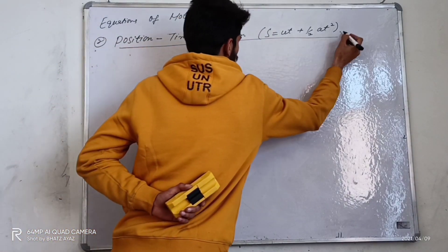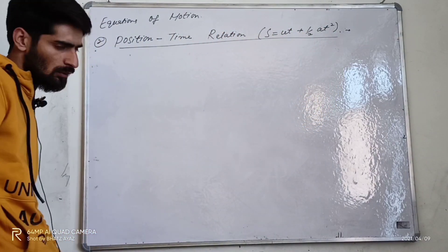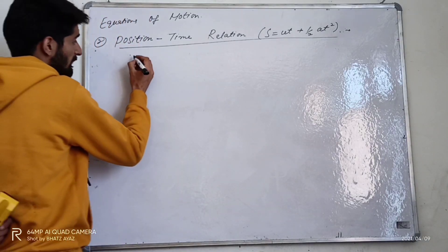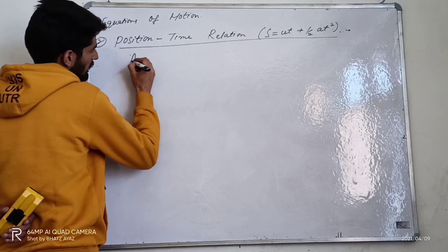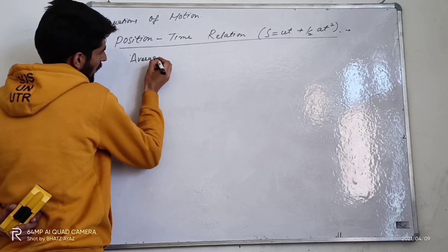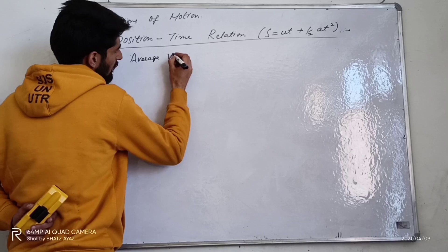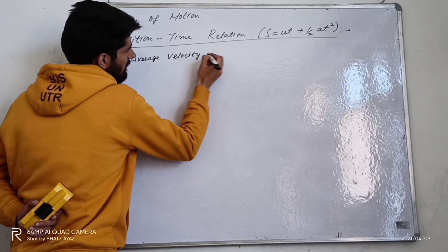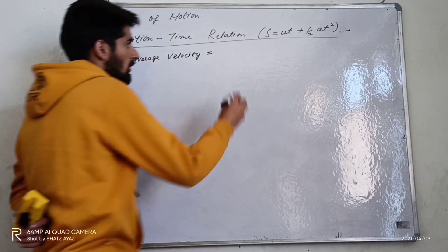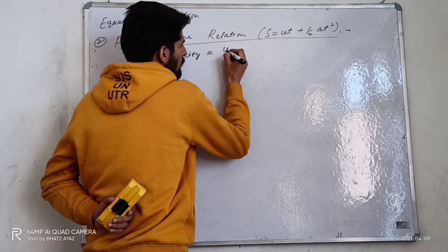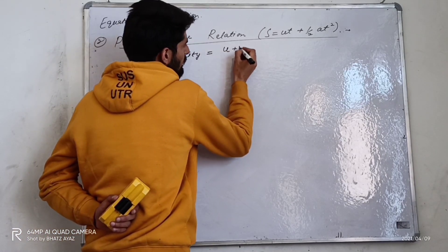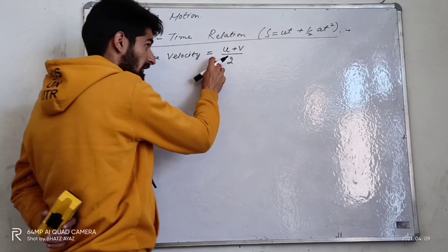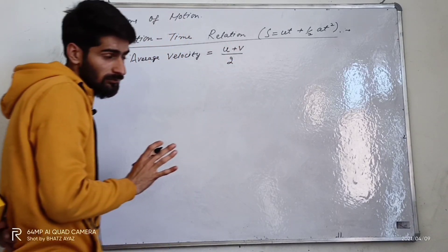To derive this, we should first know the average velocity. Average velocity is equal to u plus v divided by 2, that is the initial velocity plus the final velocity divided by 2.